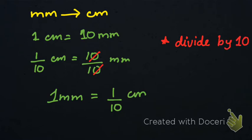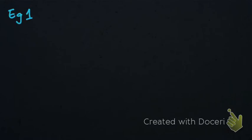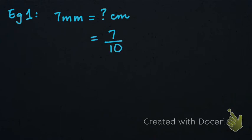This shows that when converting millimeters into centimeters, we divide by 10. When converting centimeters into millimeters we multiply, and when doing the reverse — converting millimeters into centimeters — we divide. Let's look at some examples. Example one: we have 7 millimeters and we need to convert it into centimeters, so we divide by 10.